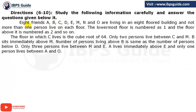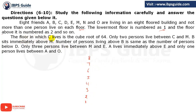Now let's see the second puzzle. Eight friends A, B, C, D, E, M, and O are living in an eight-floor building, with no more than one person per floor. The lowermost floor is number one and the floor above it is number two, and so on — floors 1 through 8. The floor in which C lives is the cube root of 64. The cube root of 64 is 4, so C must be living on the fourth floor.